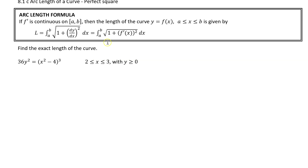So this is the next way we get rid of the radical. In some of these problems, what's going to happen is that 1 plus f'(x) to the power of 2 is going to become a perfect square, which will then cancel off the radical. Here's what you do when that happens. First thing we need is f'(x). Now our y is greater than 0, and it's telling us which of these two to pick.